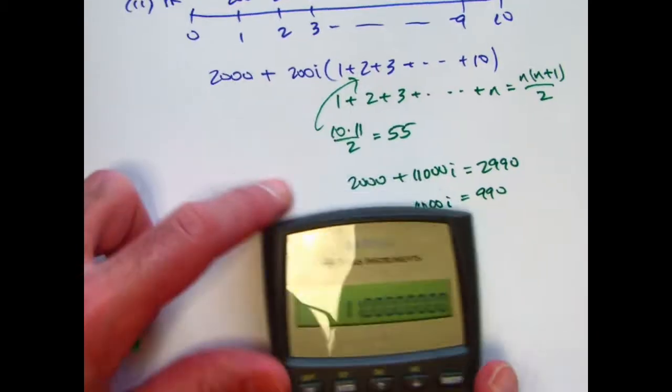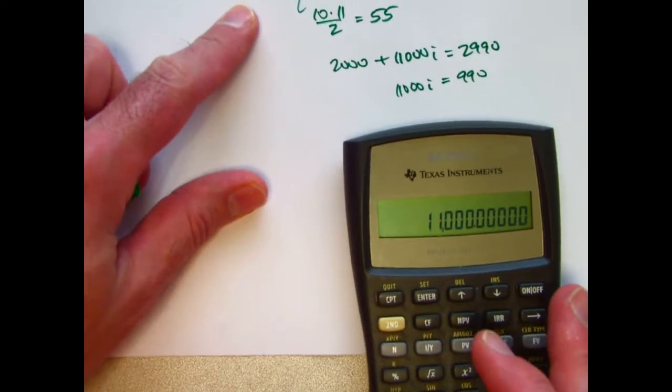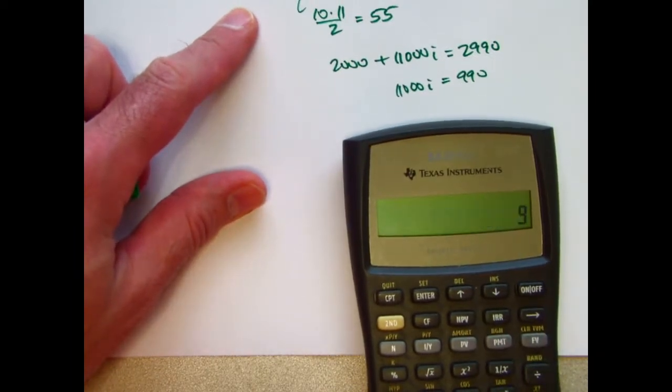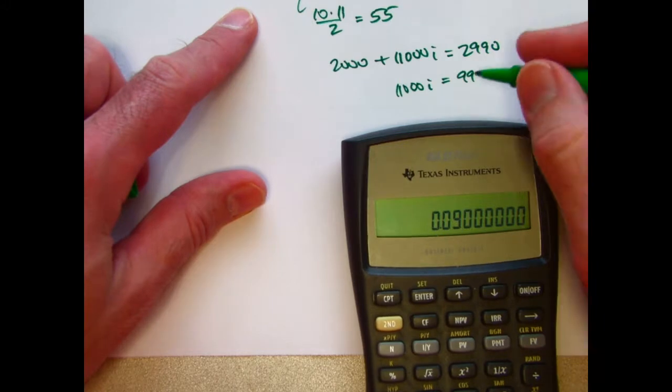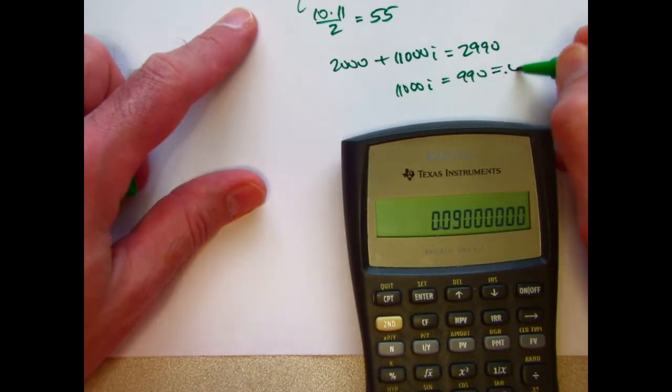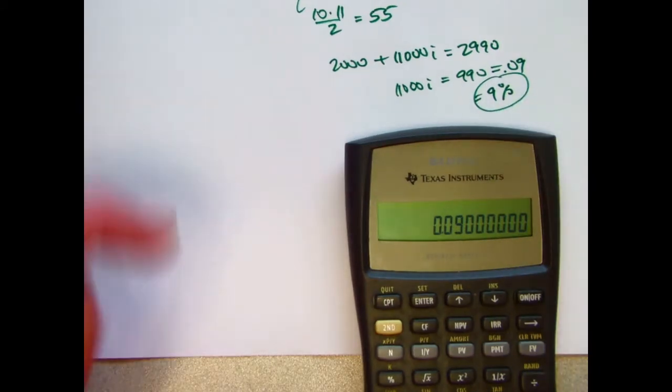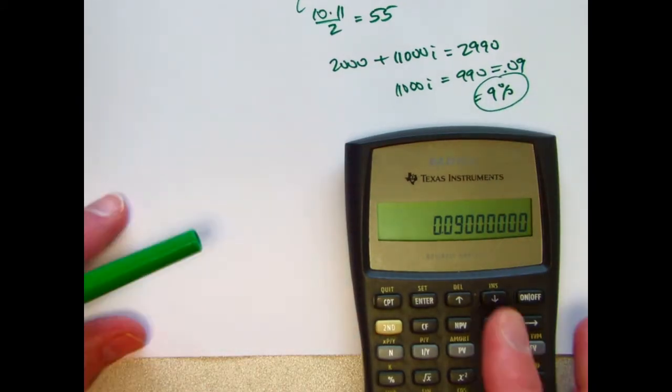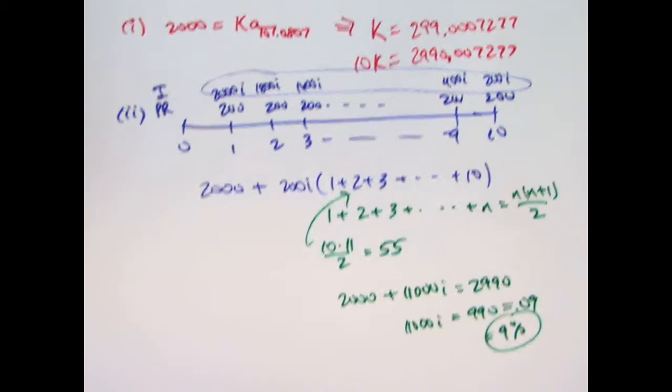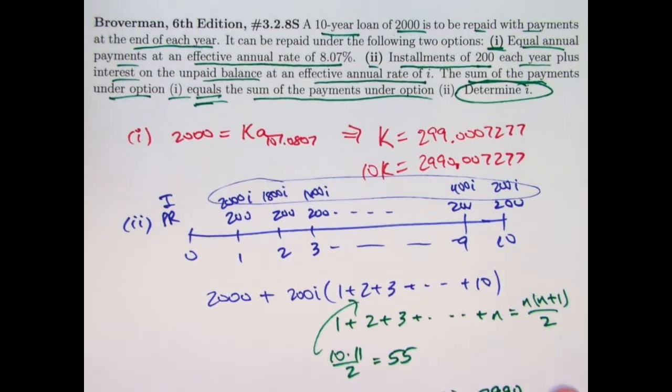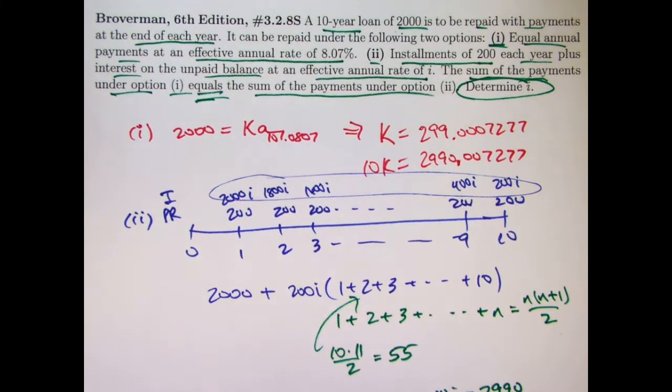So it looks like i is 990 over 11,000, which comes out to be exactly 9%. 0.09 or 9%. I'm sure that's how they would have the answer on a multiple choice example. Okay. So a little harder than the last video, but really in the big scheme of things, not too hard.